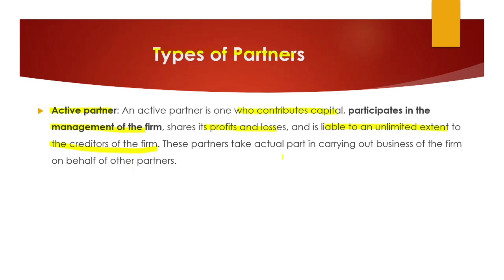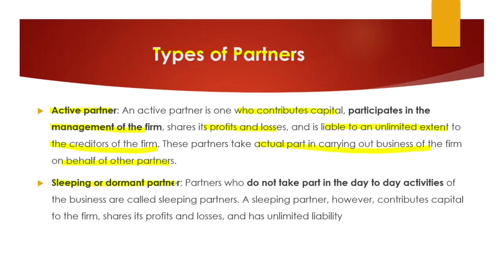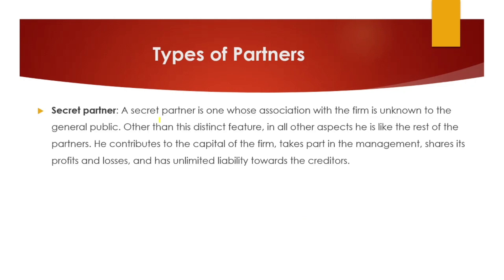The active partner actively takes part in carrying out the business on behalf of other partners. Next is the sleeping or dormant partner. As the name sounds, sleeping partners do not take an active part in day-to-day activities, but they do contribute capital and have their share in profit and loss. Their liability is also unlimited. The key difference is that active partners carry on the business while sleeping partners do not.